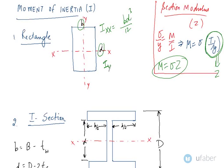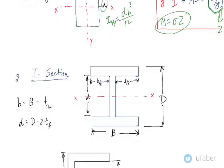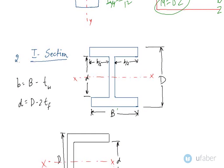Now let us come to the I-section. These are the common dimensions. The horizontal part is called a flange, and the vertical part is called a web. This is the width of the flange and this is the length of the web.